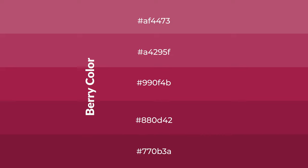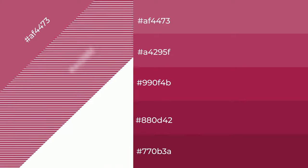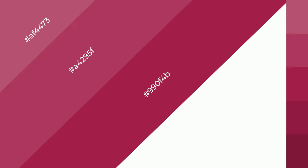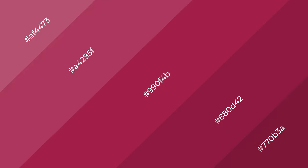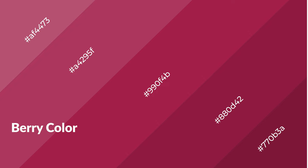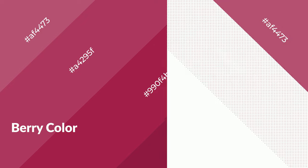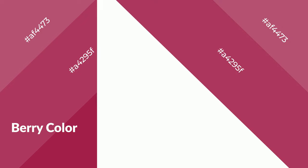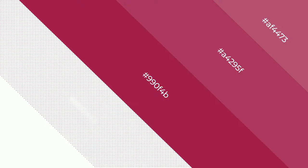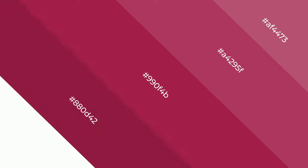Shades are used in patterns, 3D effects, and layers, and they create depth and drama. Berry is a warm color and it emits cozier and active emotions. Warm colors are symbols of warmth, fire, heat, and sunshine.